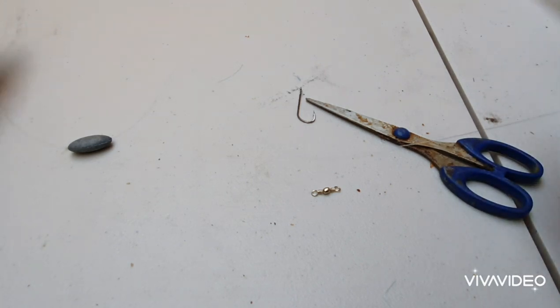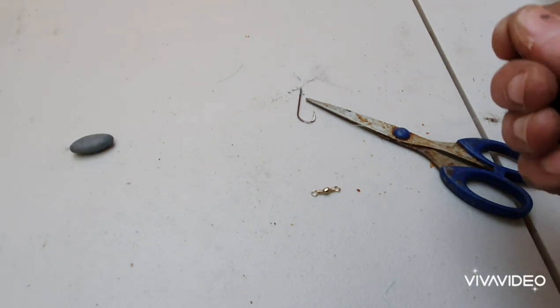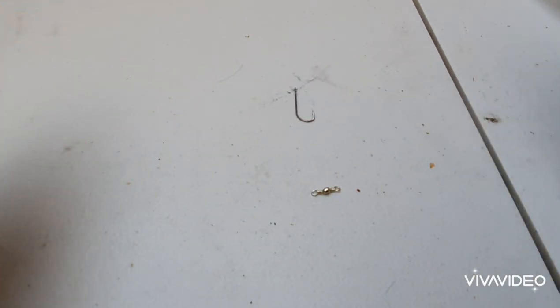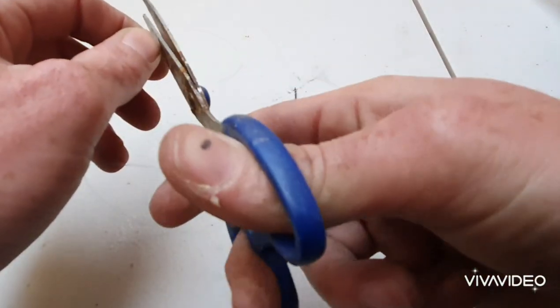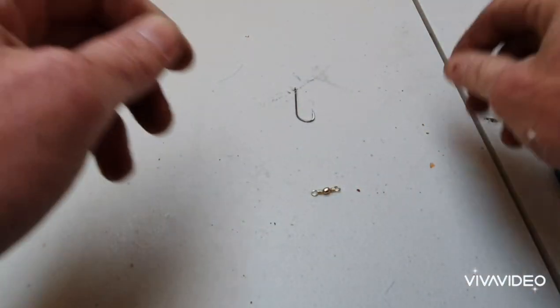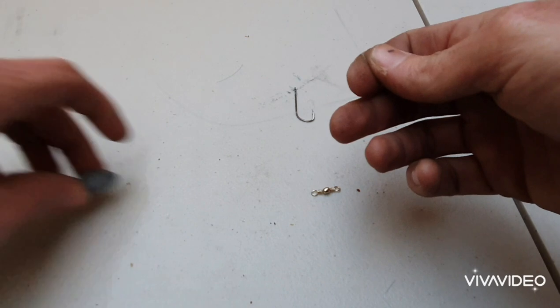Now with brim you want to make sure that you have a longer trace because they like it when their bait drifts along the current, especially if you're fishing in places like Swansea Channel, Windang, anywhere where there's a lot of current. Alright, so I've got my bean sinker size 3.